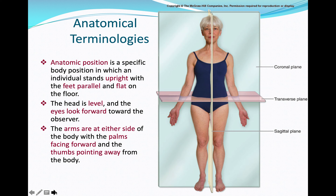Anatomical position is a specific body position in which an individual stands upright with feet parallel and flat on the floor. The head is erect, eyes looking forward toward the observer. The arms are at either side of the body with the palms facing forward and thumbs pointing away from the body to the lateral side.